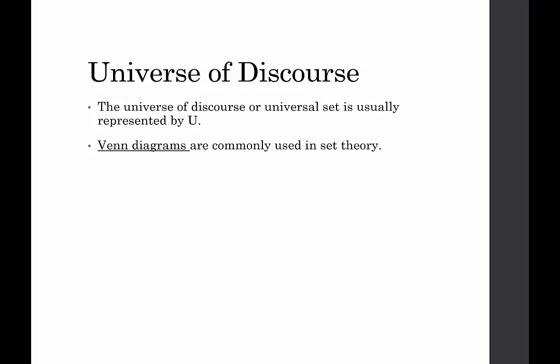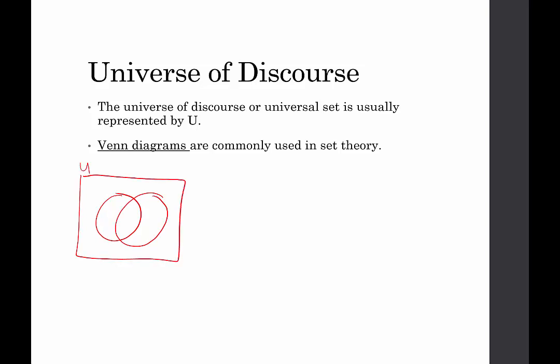When we use this universal set, we very commonly use it with Venn diagrams. Venn diagrams are very commonly used in set theory. They are diagrams invented by John Venn, and they consist of overlapping circles. Very commonly we only use two or three because it's really hard to have four overlapping circles. We use a rectangle to represent the universe, and then the circles are the sets within the universe. We might call one set A and the other set B.